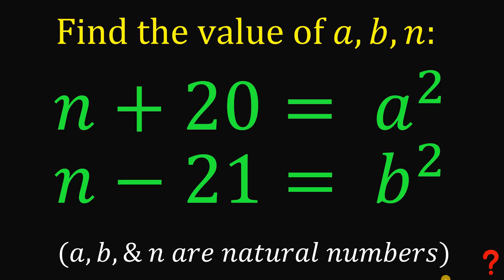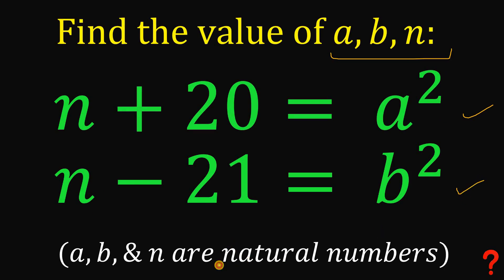Can you solve this math challenge? Here's the question: find the value of a, b, and n given these equations — n plus 20 equals a squared, and n minus 21 equals b squared — where a, b, and n are natural numbers, meaning positive integers. You can pause this video if you want to give this problem a try.